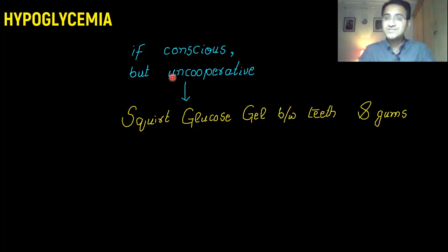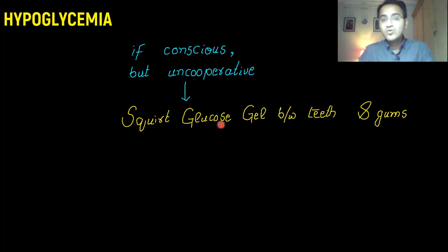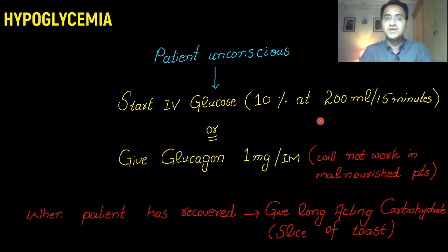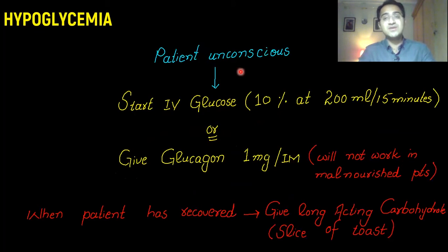If the patient is conscious but uncooperative, what you do is squirt glucose gel between the teeth and gum — that corrects the hypoglycemia. If the patient is unconscious, you cannot give anything orally because of the risk of aspiration.